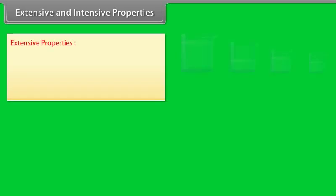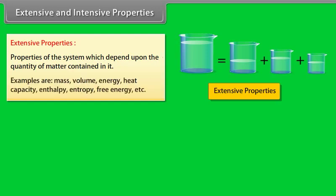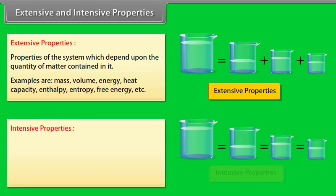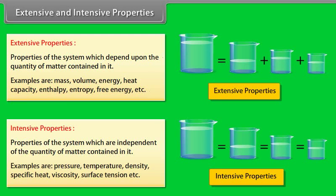Extensive properties are properties of the system which depend upon the quantity of matter contained in it. Examples are mass, volume, energy, heat capacity, enthalpy, entropy, free energy, etc. Intensive properties are properties which are independent of the quantity of matter contained in it. Examples are pressure, temperature, density, specific heat, viscosity, surface tension, etc.